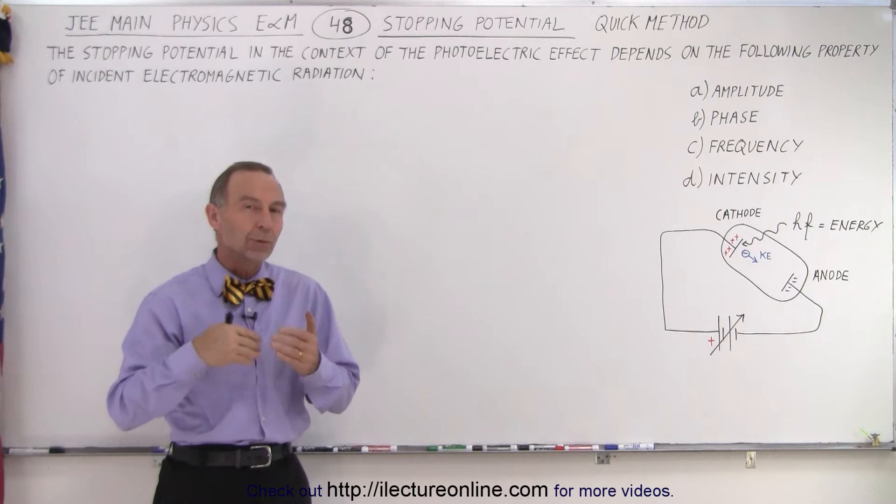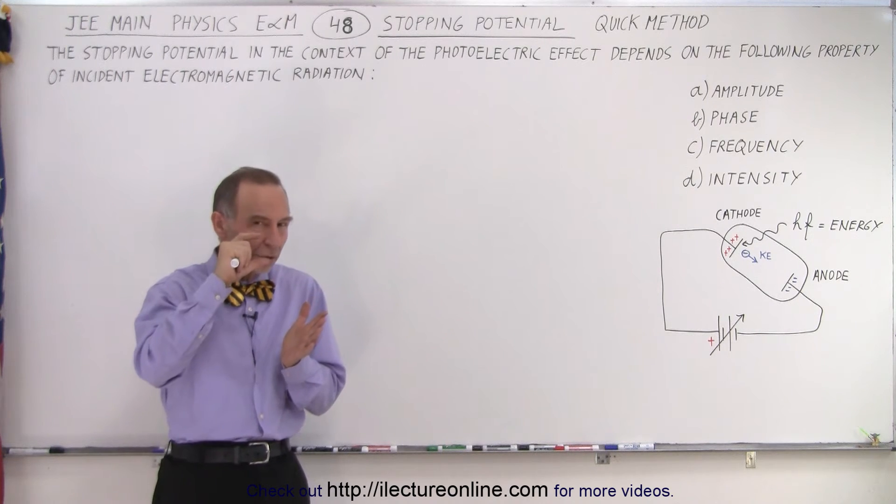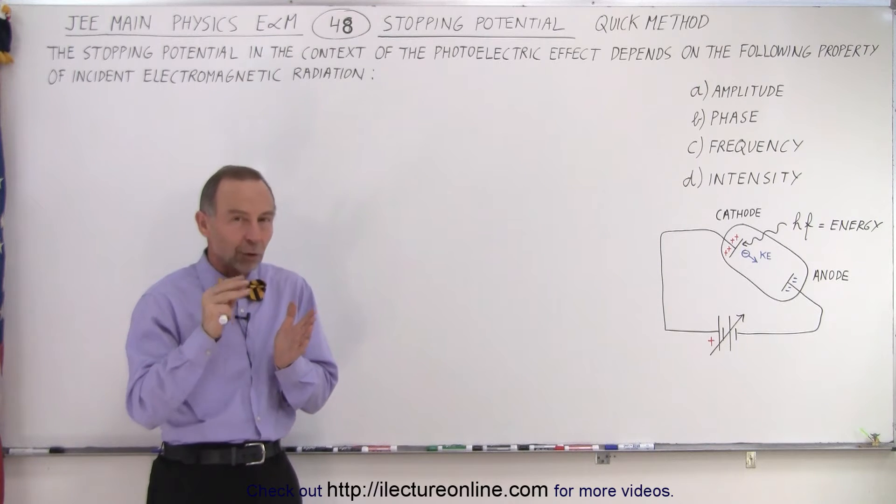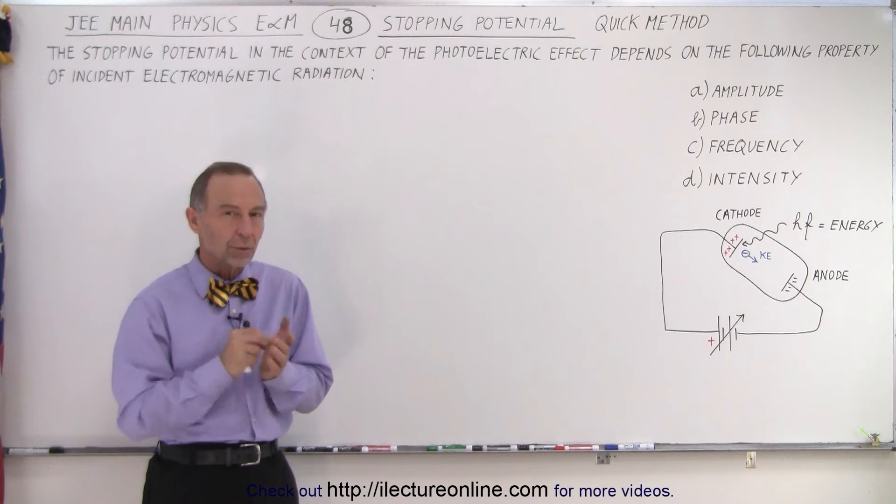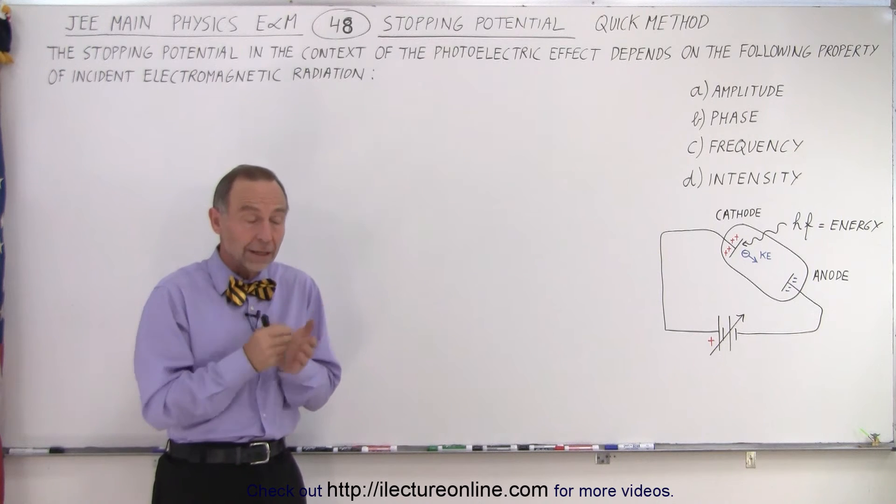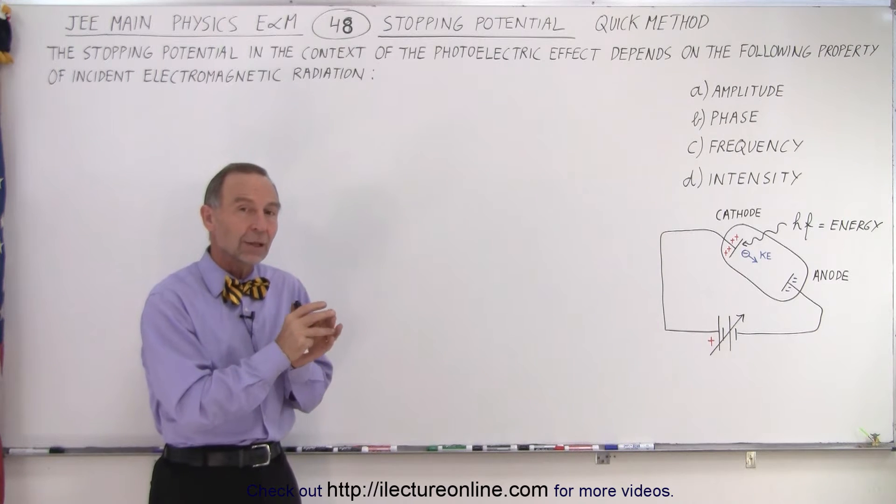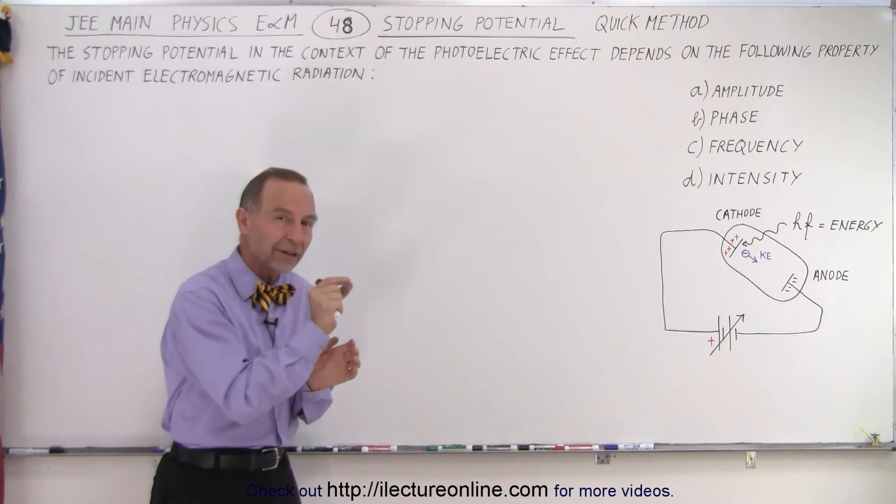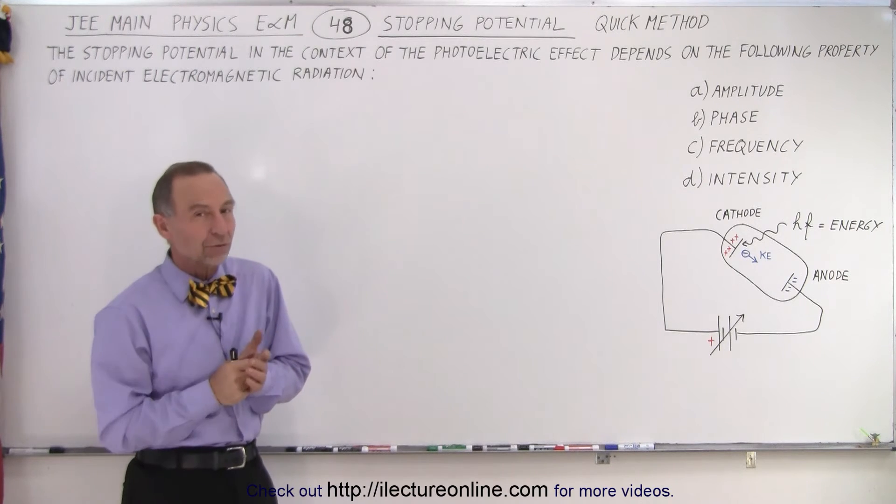But then when he had blue light, when he illuminated the plate with blue light which had a higher frequency, even though the intensity may have been very low, he was able to get electrons to jump across. So he proved that it didn't matter how many photons were hitting the plate, it had to be the photons with the right amount of energy in each photon, which depended on the frequency, to free the electrons.